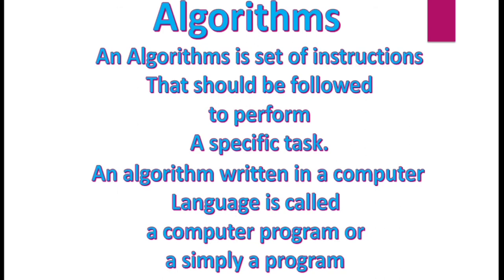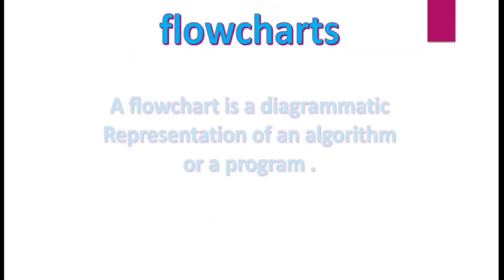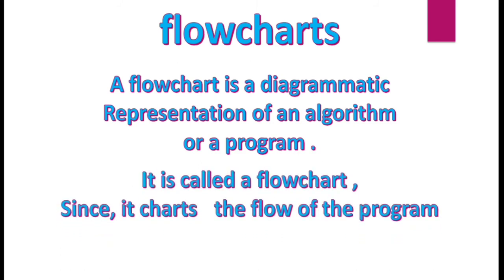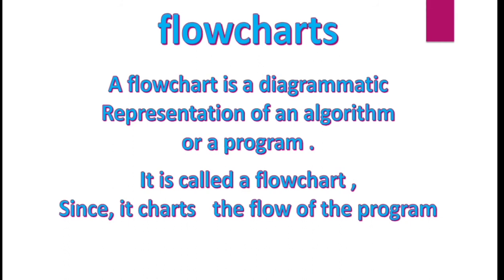Algorithm is used to show and understand the steps of performing a particular task. We also use a flow chart to explain how that program works. A flow chart is a diagrammatic representation of an algorithm or a program. It is called a flow chart since it charts the flow of a program — it shows and explains the flow of the program.